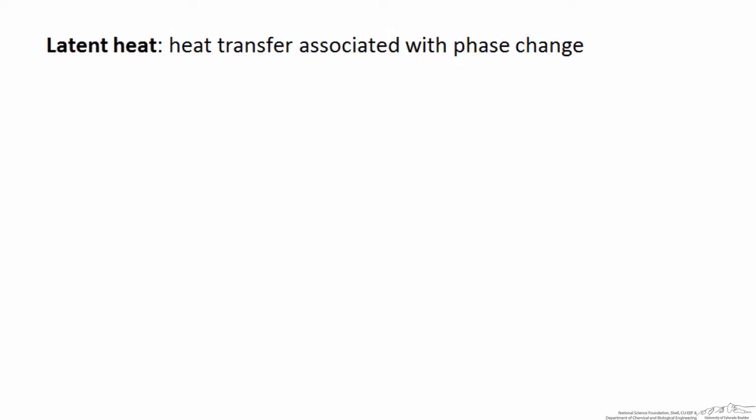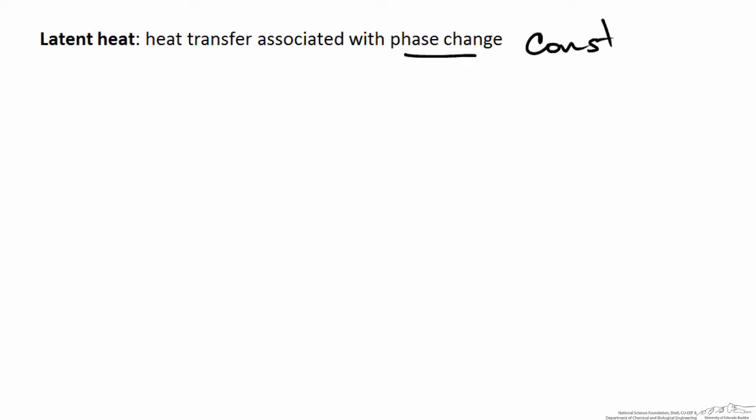In this screencast we will provide an overview of latent heat as well as look at how we can use physical property data to help us with latent heat calculations. The term latent heat is used to describe heat transfer associated with a phase change, specifically a phase change at constant temperature and pressure. By considering phase as the only variable changing, we differentiate latent heat from sensible heat, which is the heat transfer associated with a change in temperature.